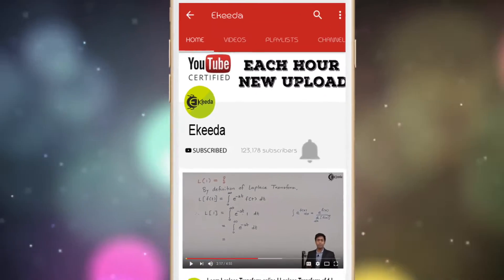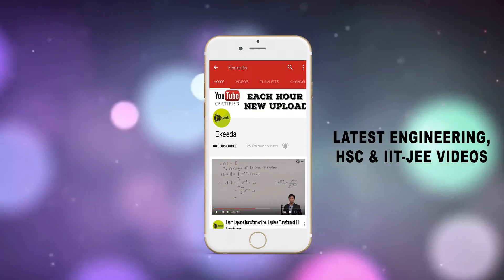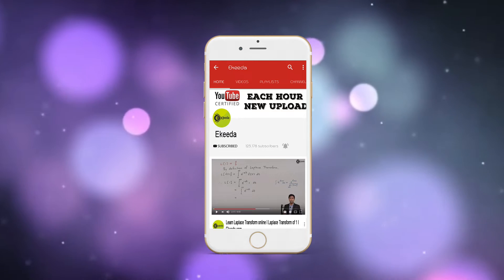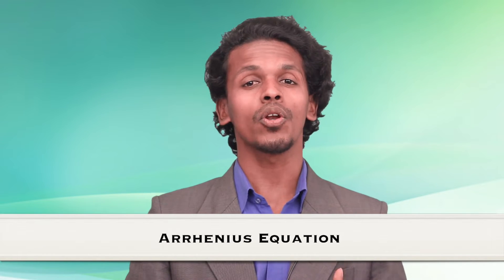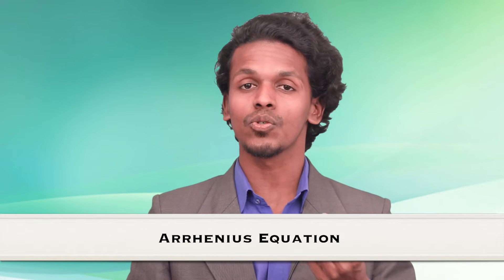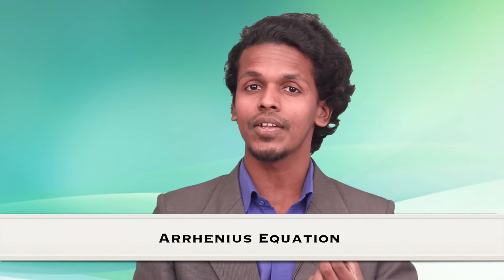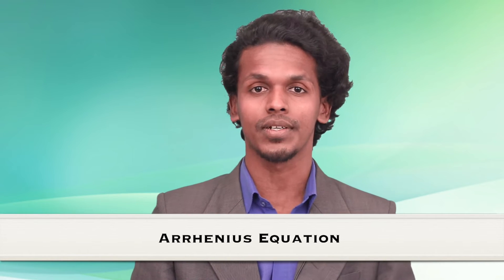Do subscribe to the channel and press the bell icon to get updates about latest engineering, HSE, and IIT JEE Mains and Advanced videos. Hello friends, in the last lecture we studied collision theory, which was based on colliding of molecules with proper orientation and possessing sufficient energy to make the product — that is known as energy of activation. Related to this, there is a new equation we are going to see, known as the Arrhenius equation. Let us see how it has been derived.